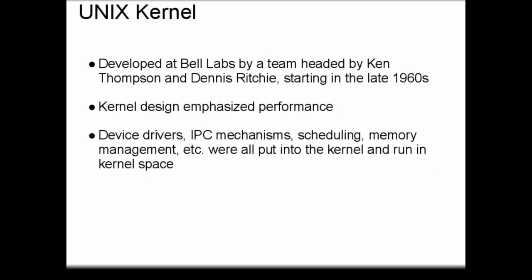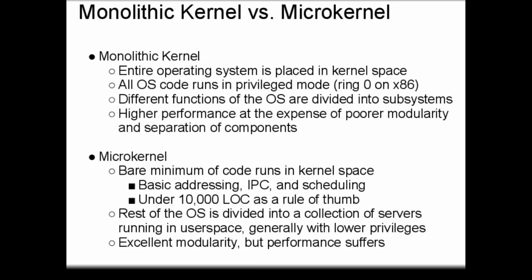On the other hand, the opposite extreme would be the Unix kernel, developed at Bell Labs by a team headed by Ken Thompson and Dennis Ritchie, also starting in the late 1960s. The difference between the Unix kernel and the RC-4000 monitor was that the Unix kernel's design prioritized performance. Instead of having a very small kernel that simply provided an IPC mechanism and basic resource collision avoidance, this kernel provided all the device drivers, all the scheduling, all the memory management — including support for multiprogramming — directly inside the kernel. This was an early example of what would later be called a monolithic kernel.